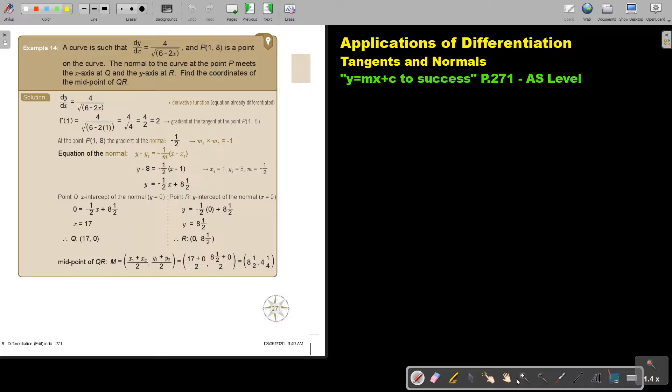Let's look at this example. A curve is such that, very important, it's already differentiated. That shows dy by dx and 1,8 is a point on the curve. The normal to the curve at the point P meets the x-axis at Q and the y-axis at R. Find the coordinates of the midpoint of QR.